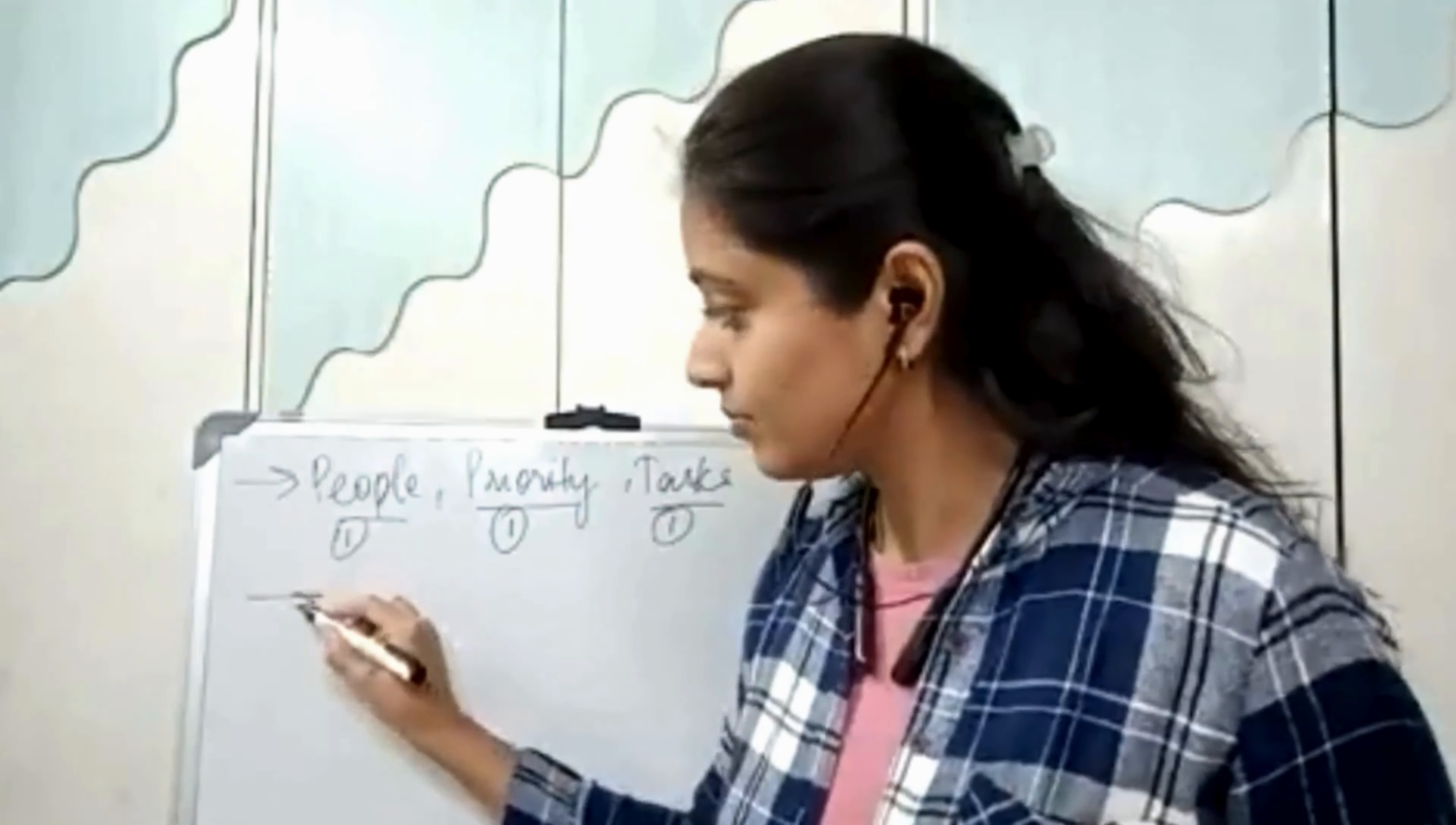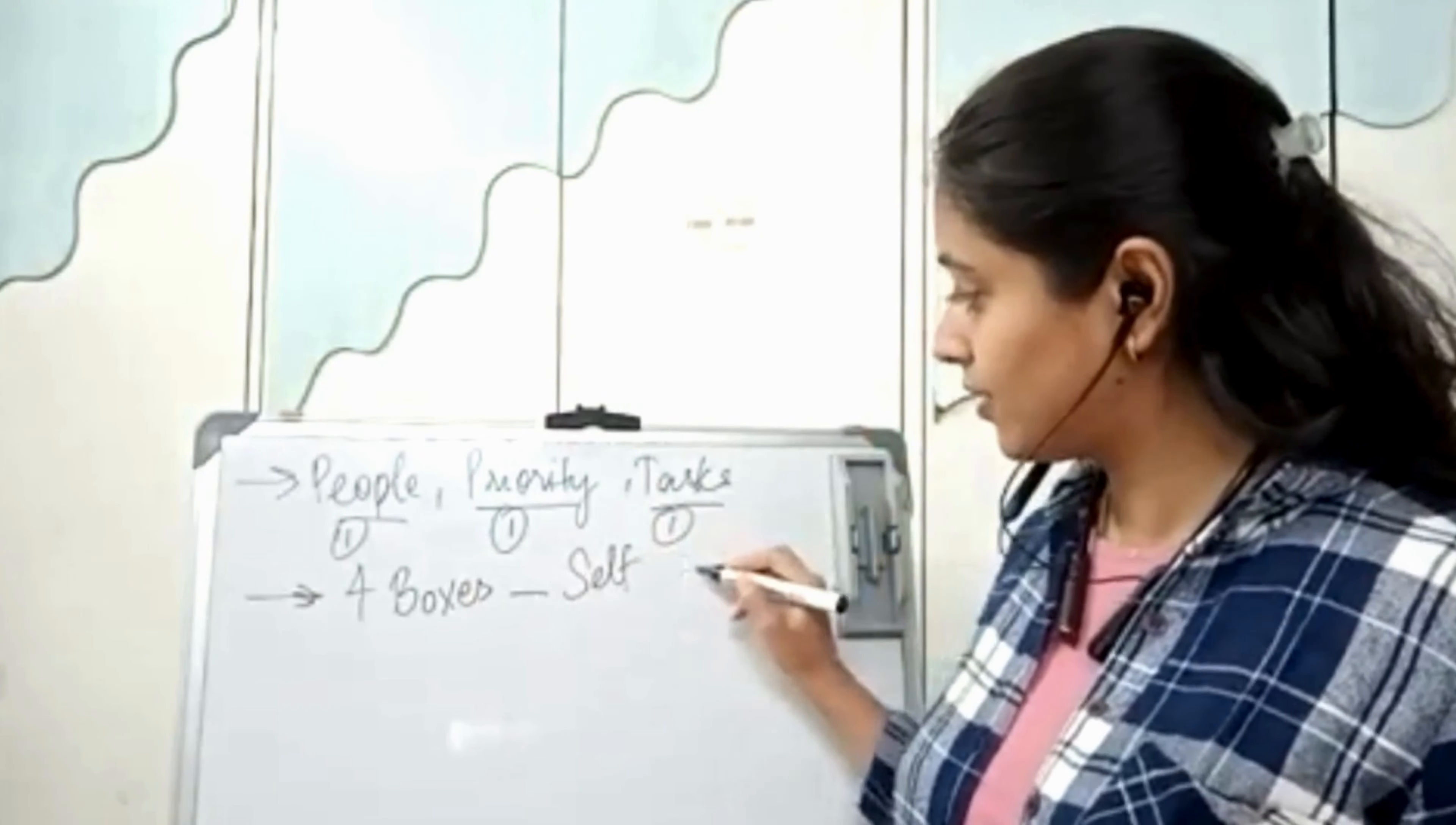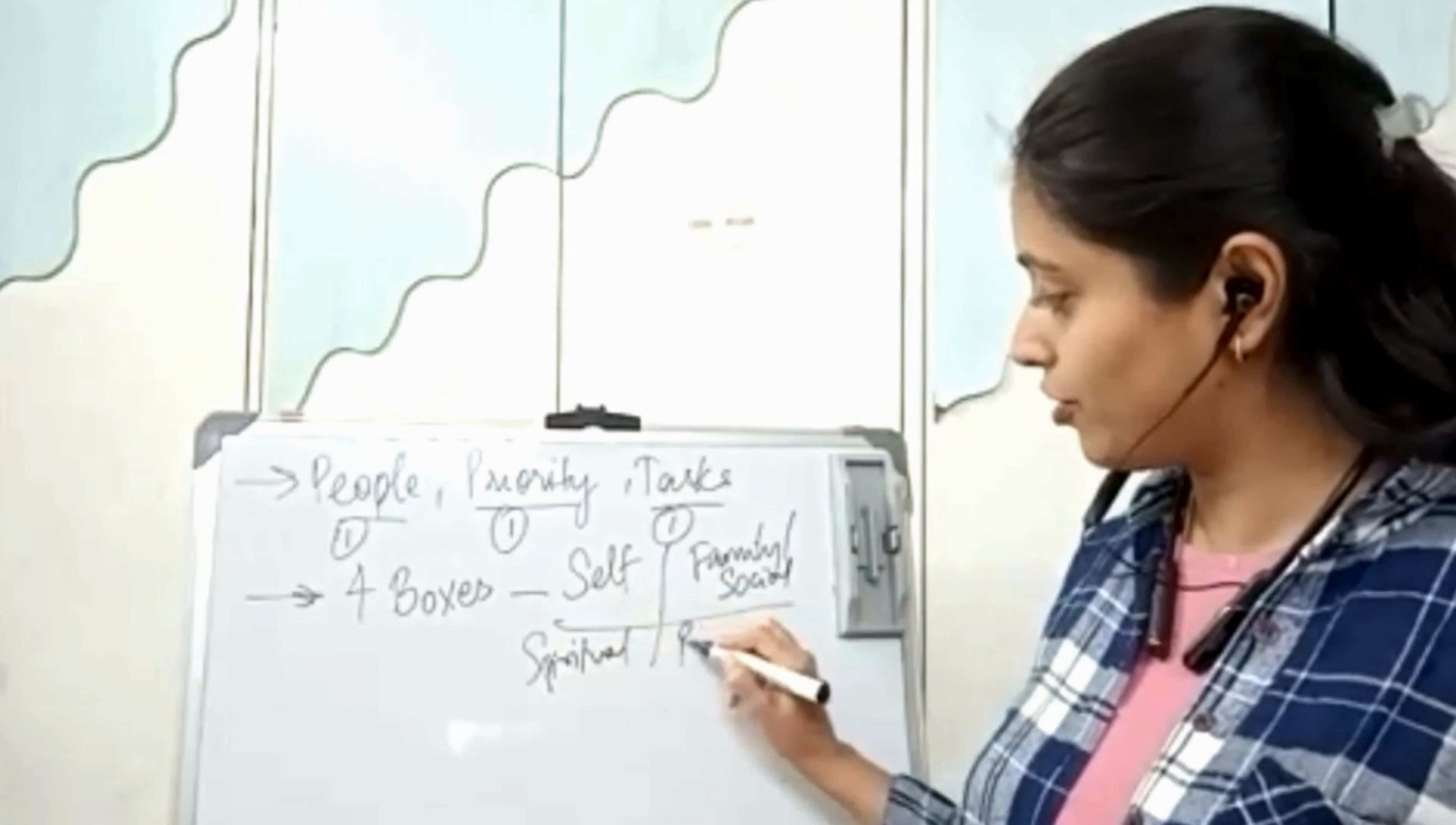Then, second way is 4 boxes. What are our four boxes? Self, family, tradition and professional.